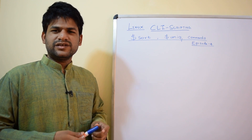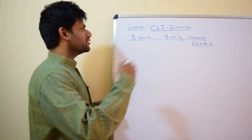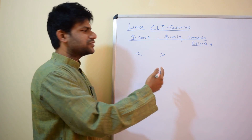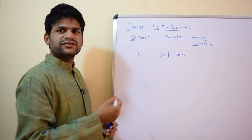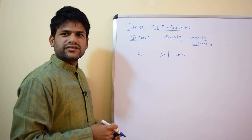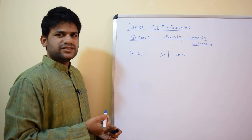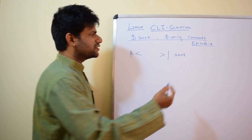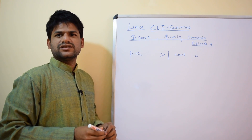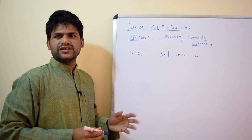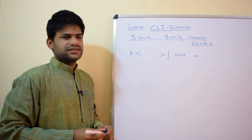Once you are done with your full command line script, you can pipe the output to sort, and it will sort your entries. In case you want to eliminate duplicates, you can use the sort -u option. This option is quite handy when you want unique entries as the output of the sort command.